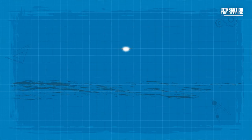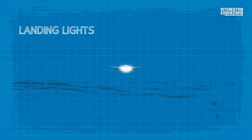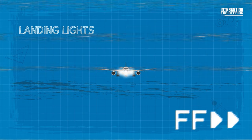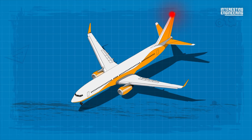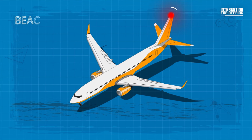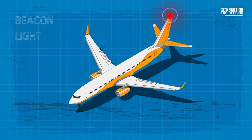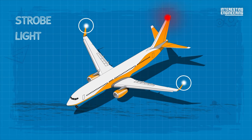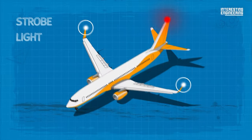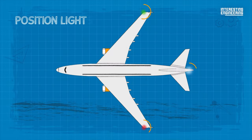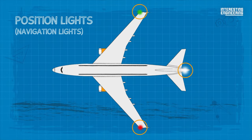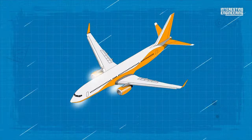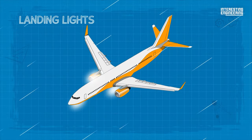The first one is called landing lights. The second type of light is beacon light. The third is strobe light. And lastly, we have position lights, that are often referred to as navigation lights.